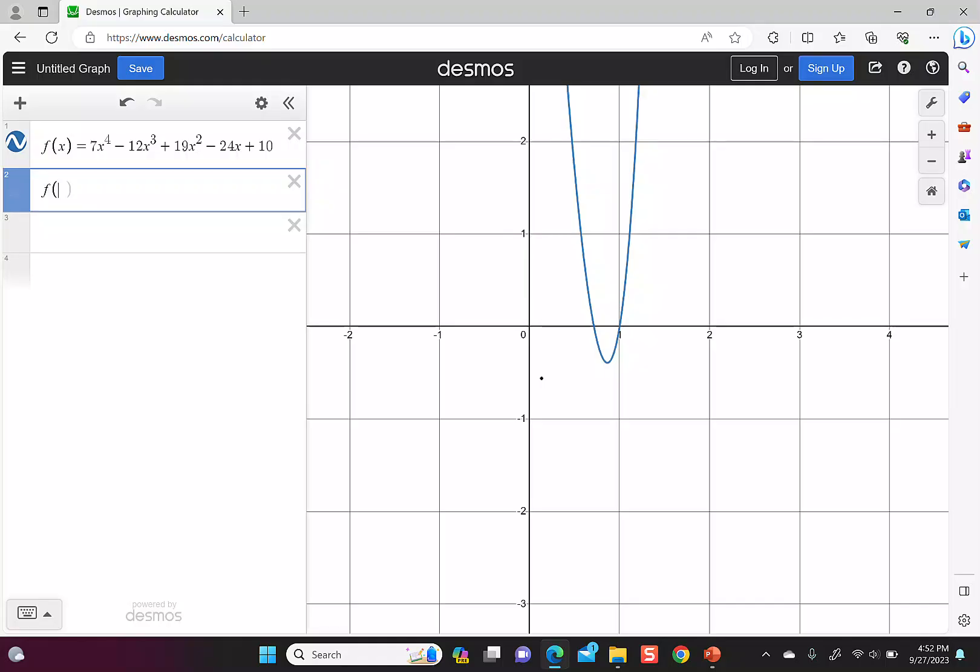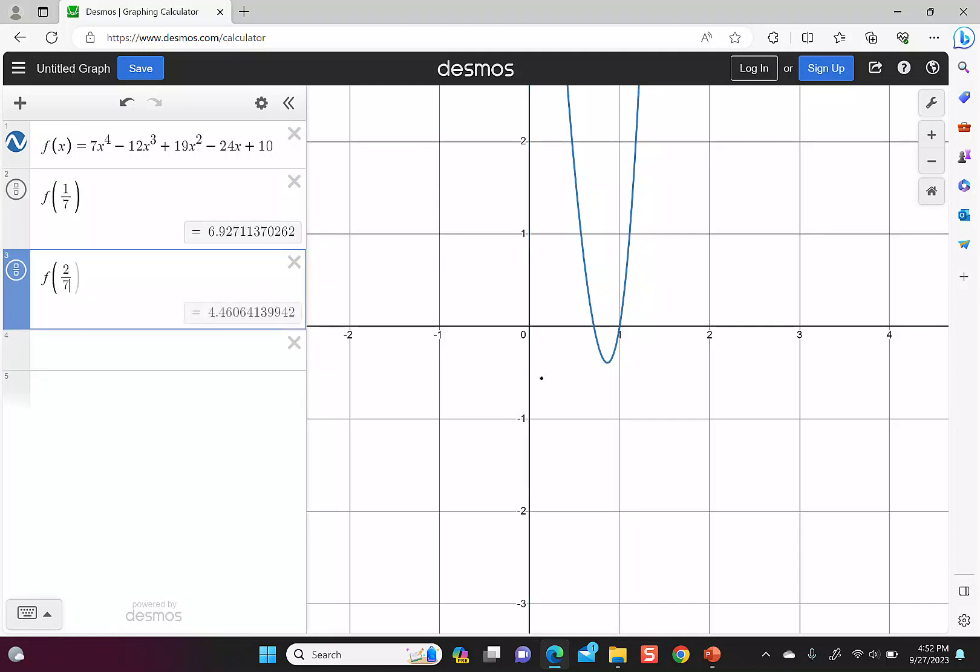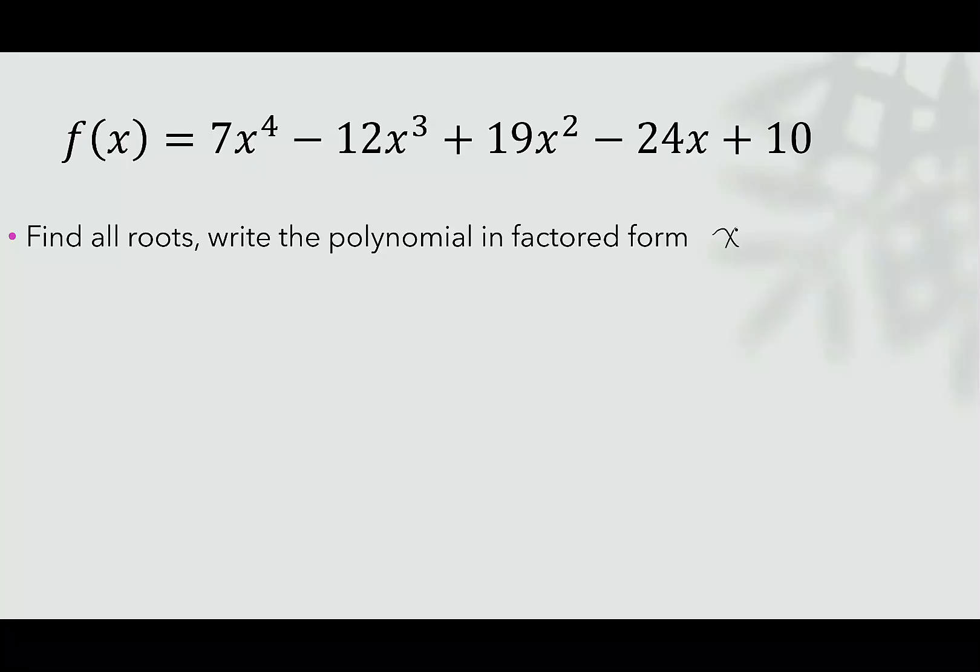Back in Desmos, I'm going to type f(1/7), which is not equal to 0. I'm going to try f(2/7), also not 0. Then we'll try f(5/7), which gives us 0. So this is the other intercept that we could see on a graph. In fact, if you type 5/7, you'll see that it's about 0.714.